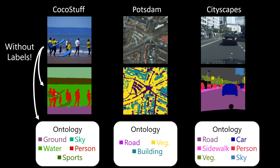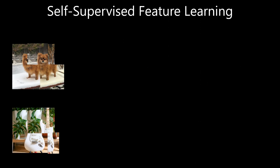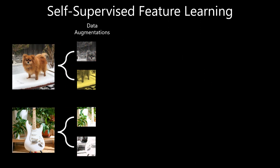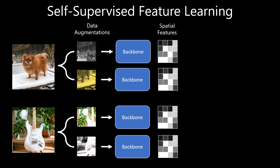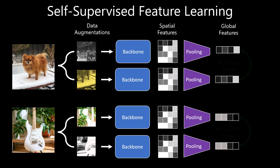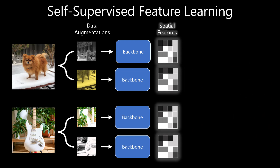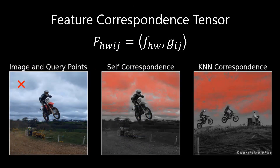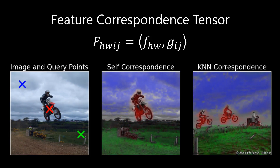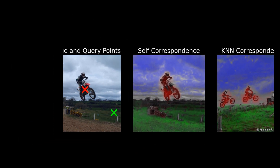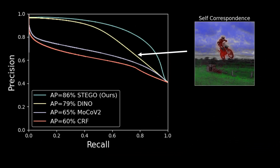Our work is based on recent advances in self-supervised feature learning. These systems take augmentations of images and pump them through a shared visual backbone. This creates spatially varying features which can then be pooled together and pushed together if they come from the same image, or pushed apart if they come from different images. We can then remove these final pooling layers to be left with just the dense spatially varying features. By comparing different regions across images using cosine similarity in feature space, we find that these features already know how to put images in dense correspondence with each other. We find that when two points have very similar features, it's highly likely that these points will share the same label in our ground truth dataset.